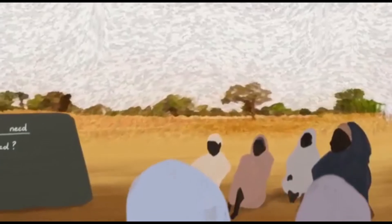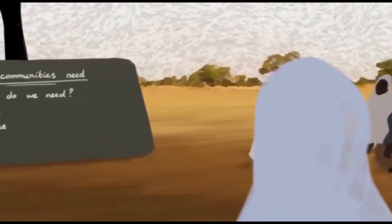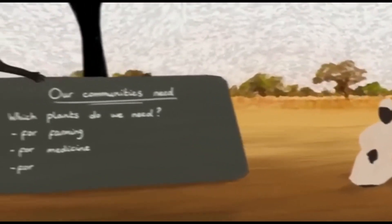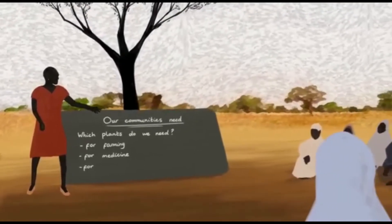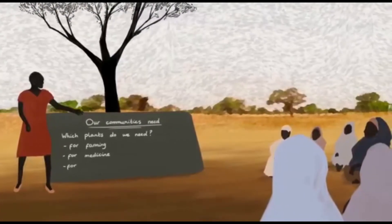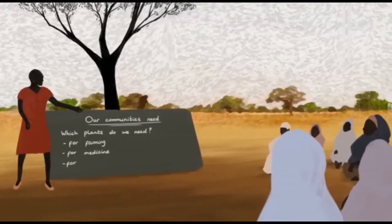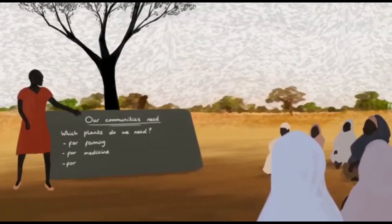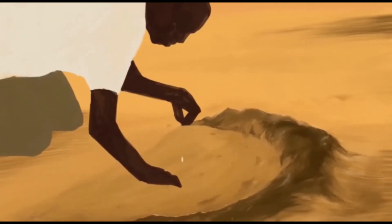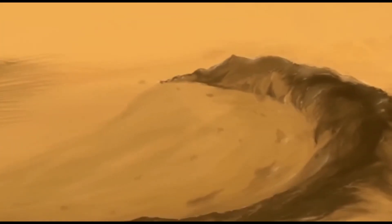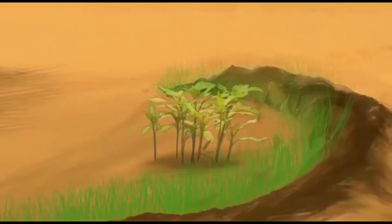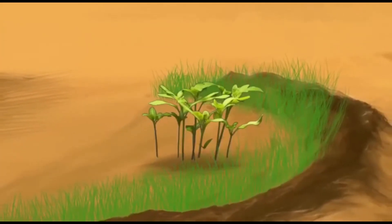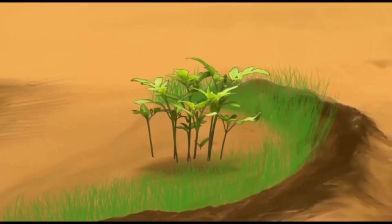This initiative is empowering people through training and better government mechanisms, promoting practices that suit local environmental conditions so that communities can manage the land more sustainably. For example, in the Sahel, farmers can meet the challenge of infrequent rains by planting seeds and seedlings in half-moon shaped holes that help to retain water.